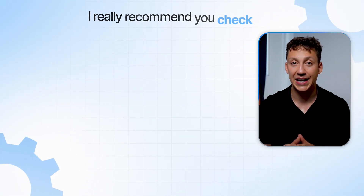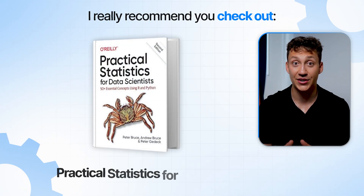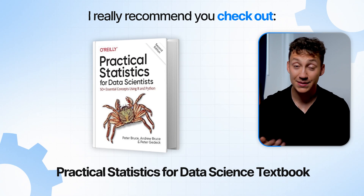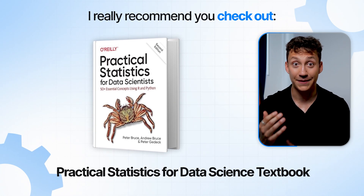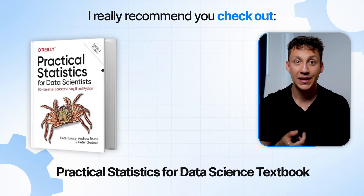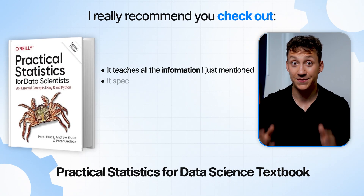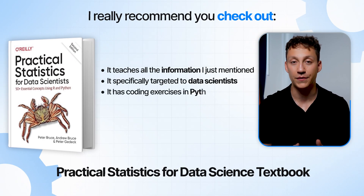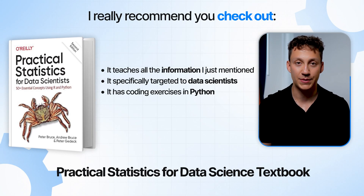I want to make this roadmap really simple, so I don't want to give you so many resources that you feel overwhelmed. To learn all the stats I just mentioned, I really recommend the Practical Statistics for Data Scientists textbook. It's the best book for statistics if you want to be a data scientist because: one, it teaches all the information I just mentioned; two, it's specifically targeted to data scientists; and three, it has coding exercises in Python so you get hands-on experience.